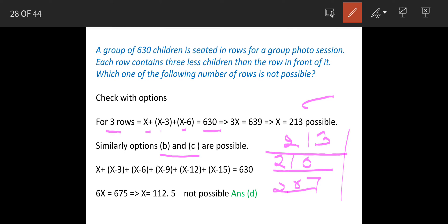But when we check the option d for 6 rows, these are the going to be number of children: x, x minus 3, x minus 6, and last row will have x minus 15 is equal to 630. So when we solve this, we get value of x in decimals 112.5.